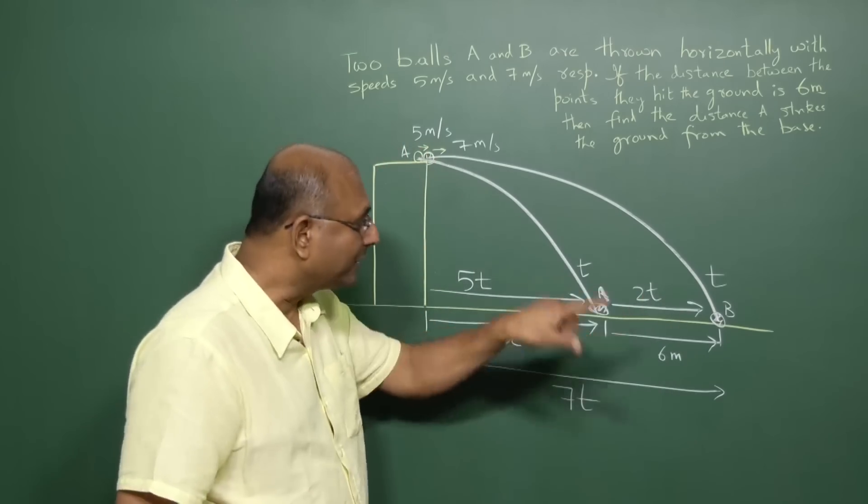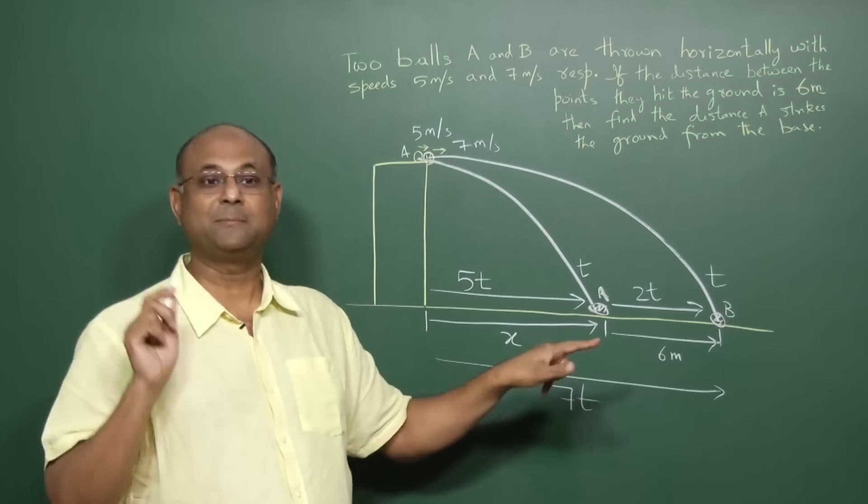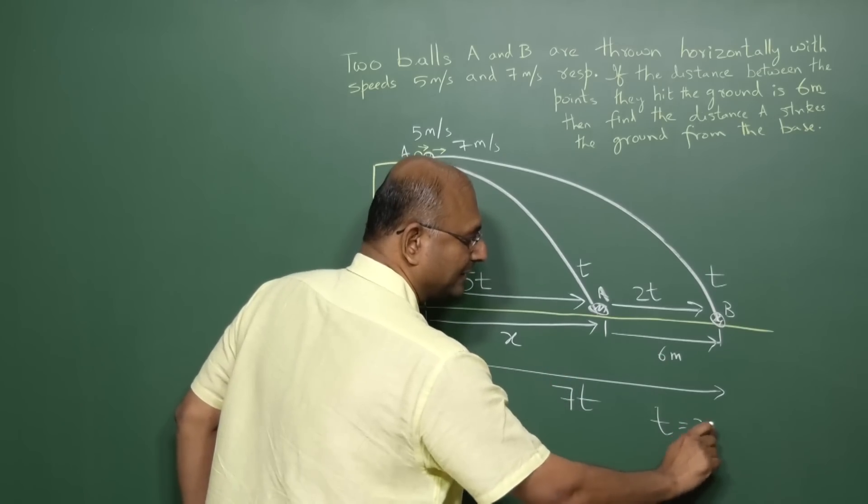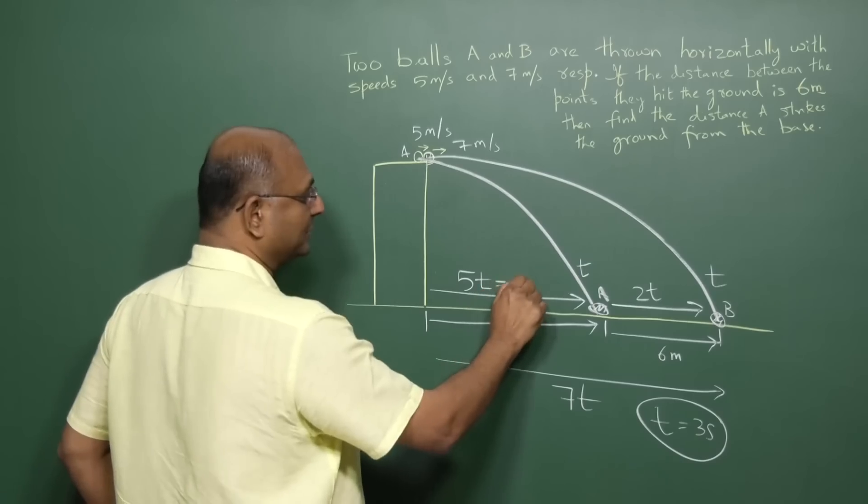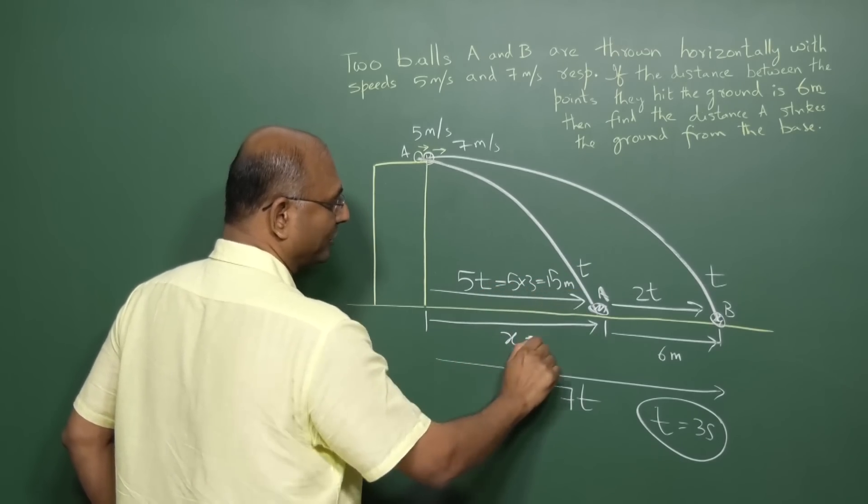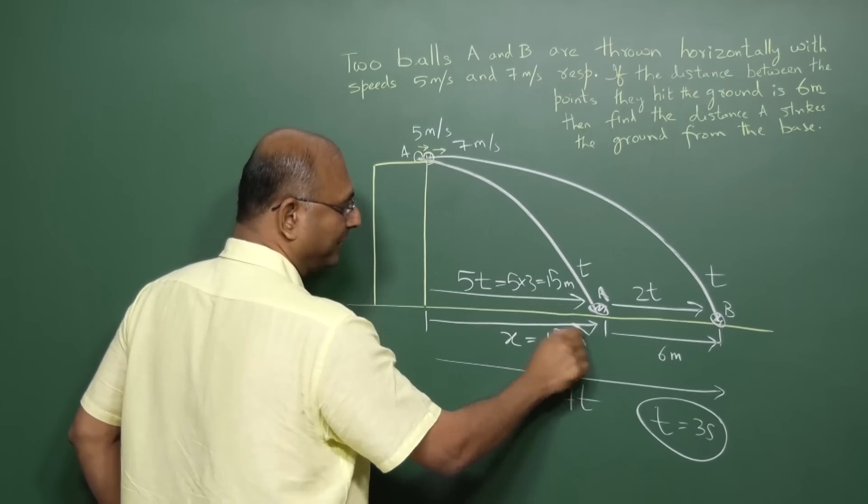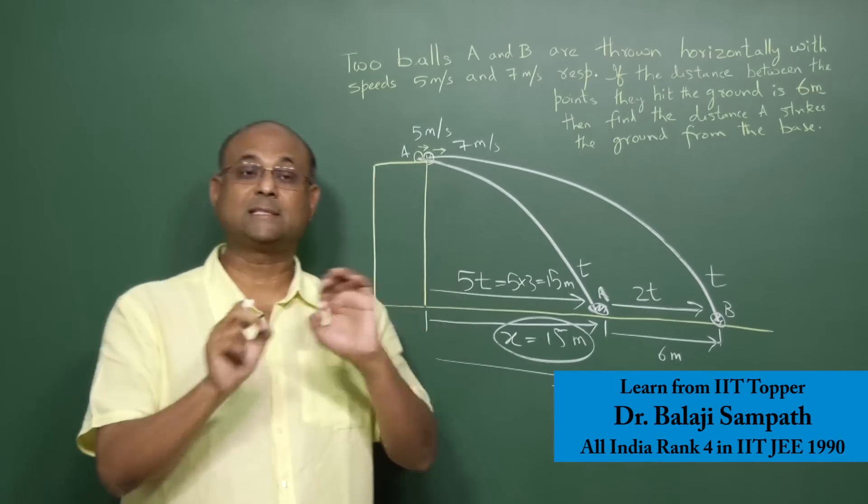So 2t must be equal to 6 meters. So if 2t is 6 meters, t must be equal to 3 seconds. So you know t is 3 seconds. Once you know t is 3 seconds, 5 into 3 is 15, and so you know that x is 15 meters.